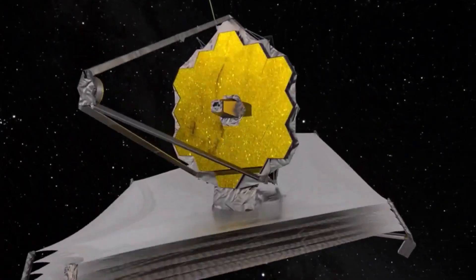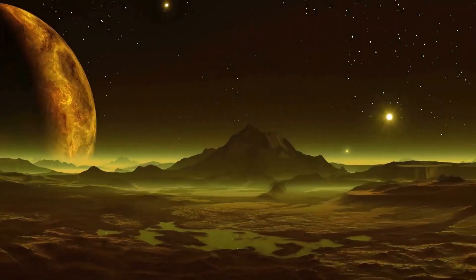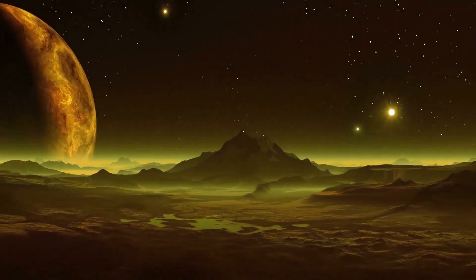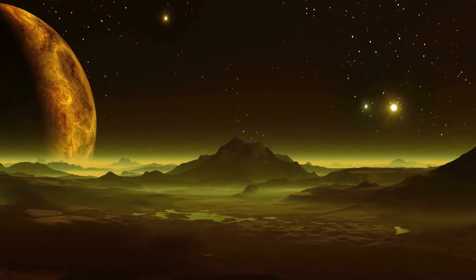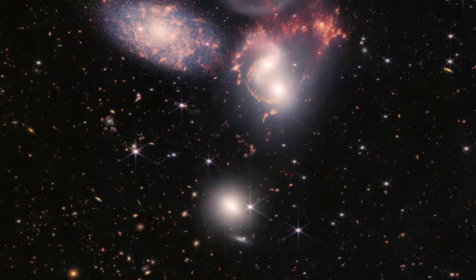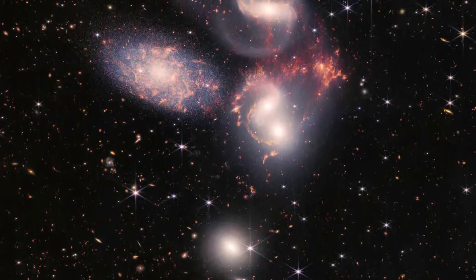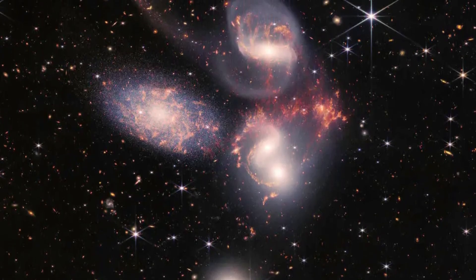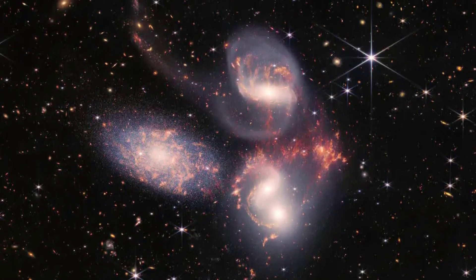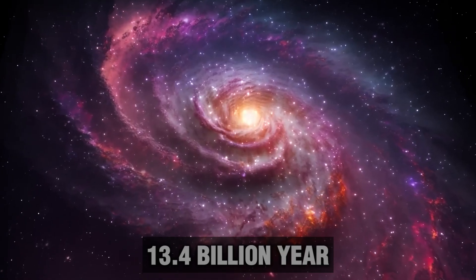The James Webb Space Telescope was designed to look at the farthest galaxies in the universe. In the middle of December, scientists confirmed that Webb did exactly that. The telescope successfully observed the four galaxies that are the most distant, and as a result, the oldest.